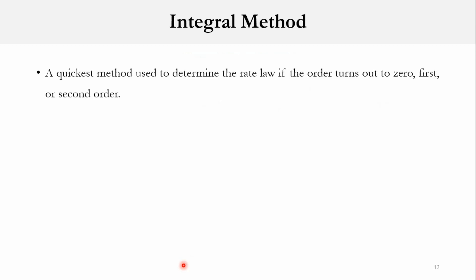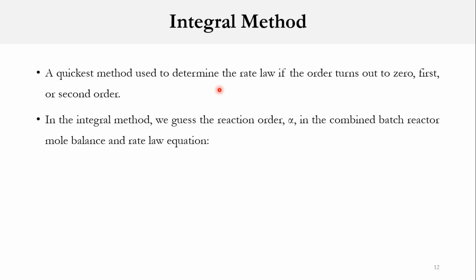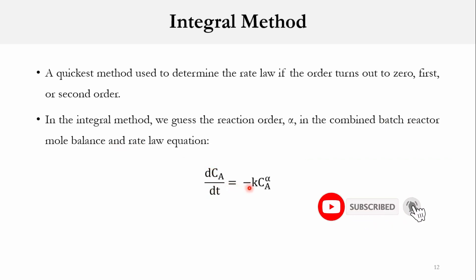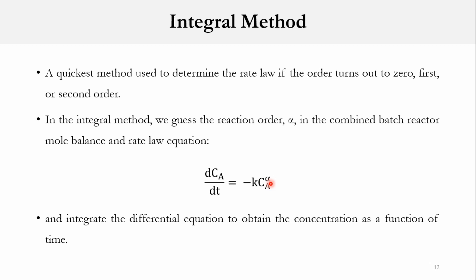Moving to the integral method — it is the quickest method to determine the rate law, but the condition is that the reaction order must be 0, first, or second order. In this method, we simply guess the reaction order. In the combined batch excess mole balance equation, dC_A/dt equals minus K' times C_A raised to power alpha. We assume alpha first — for zero order, first order, or second order — integrate the differential equation, and obtain concentration as a function of time.